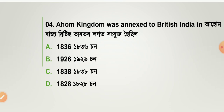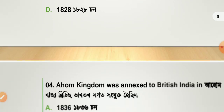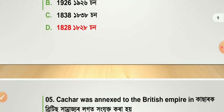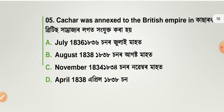The Ahom Kingdom was next to British India. The answer is option number D — 1828 AD. The Ahom Kingdom was adjacent to British India.